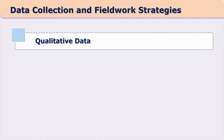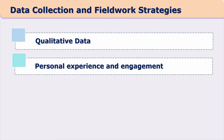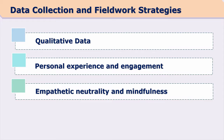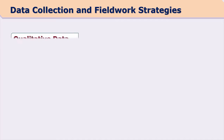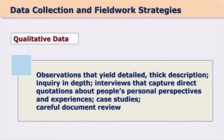Now let us discuss characteristics of qualitative research in terms of data collection strategies and fieldwork strategies. Data is qualitative — it comes from personal experience and engagement. Our data collection happens through empathetic neutrality and mindfulness, and our data collection strategies are dynamic systems. Qualitative data is based on observation which is a detailed and thick description. We are interested in very minute, detailed observations of a culture, maybe an intervention, maybe of a case, a person, or a phenomenon.